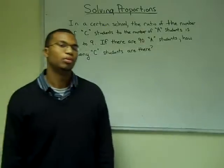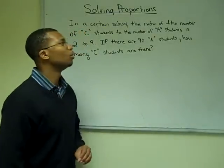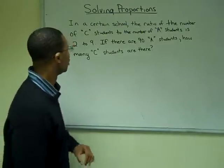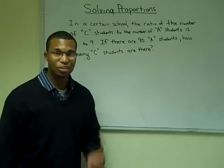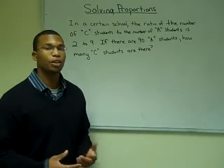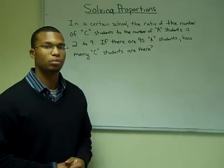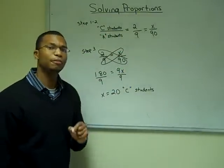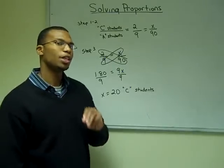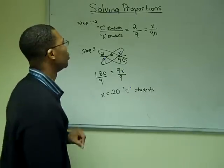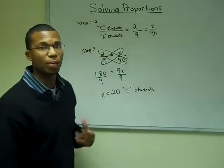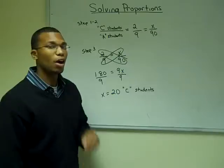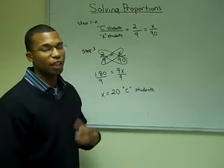Let's look at another problem. This problem says in a certain school, the ratio of the number of C students to the number of A students is two to nine. If there are 90 A students, how many C students are there? Solving this problem using steps one and two, assigning the variables and setting up the fractions, we know that our ratio is going to compare the amount of C students to the amount of A students. It was given that our original ratio is two to nine, and our amount of C students is the unknown x.